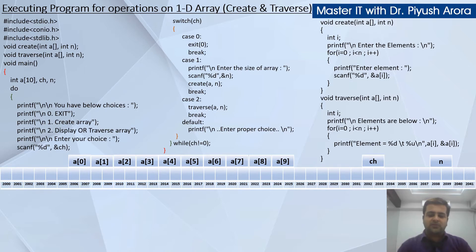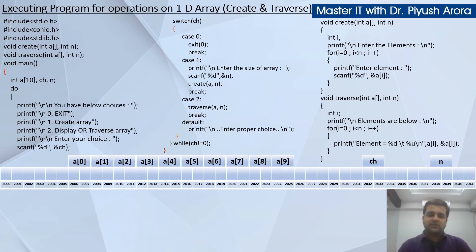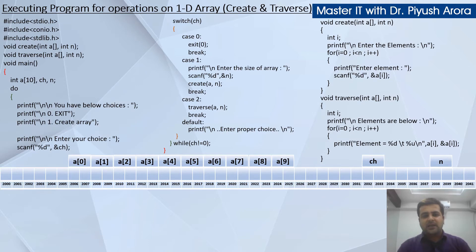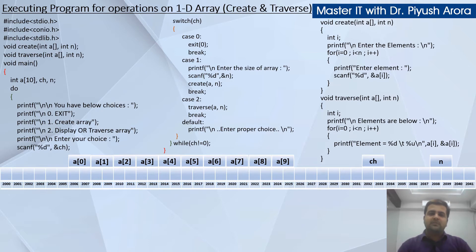Each element occupies 2 bytes of space. The do-while loop will start with an opening bracket. We will show the user all the choices: you have the below mentioned choices — 0 to exit, 1 is to create the array, and choice number 2 is to display or traverse the array. After that, we will ask the user what they want to do: what is your choice?